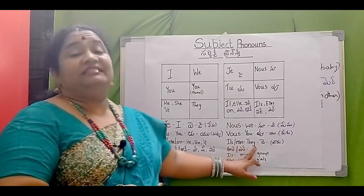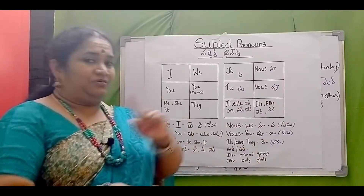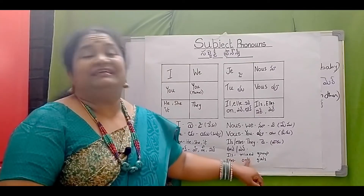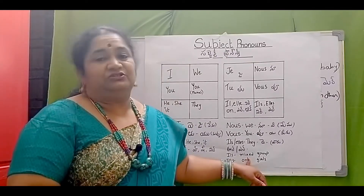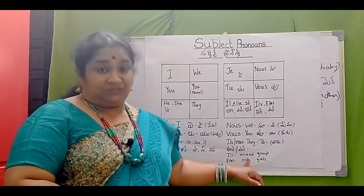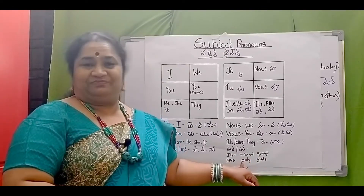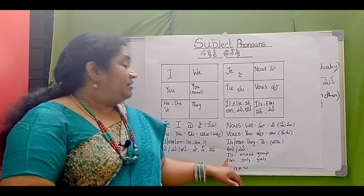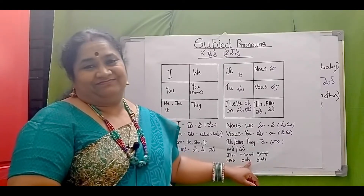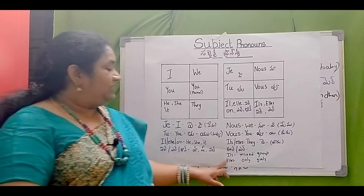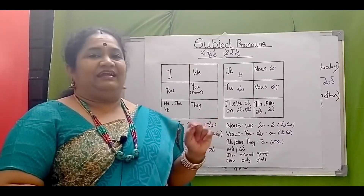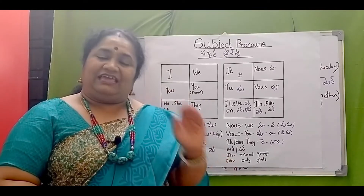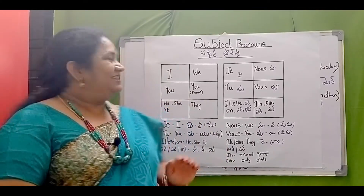Ils and elles — for 'they.' Ils is used for a mixed group of boys and girls together. When there is a group with males, you say ils. Elles with an 's' at the end means only girls — only women. So elles ending in 's' means all female group.